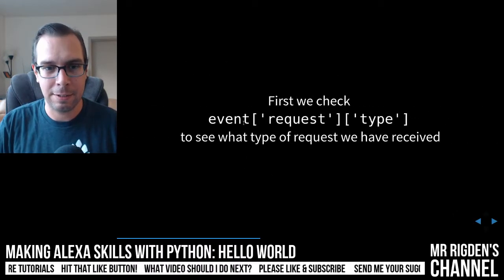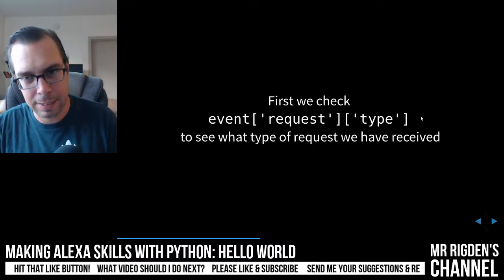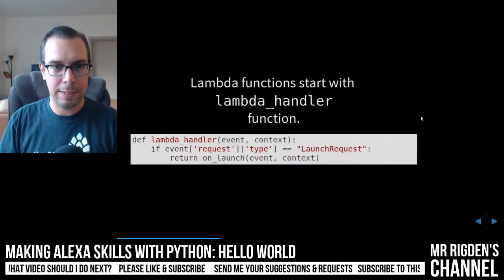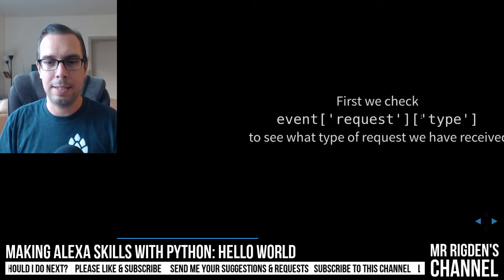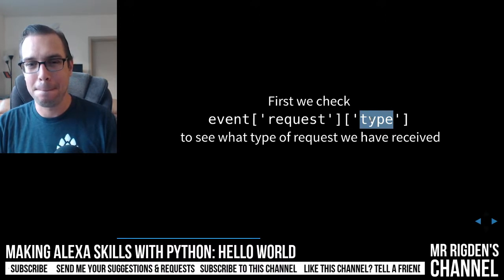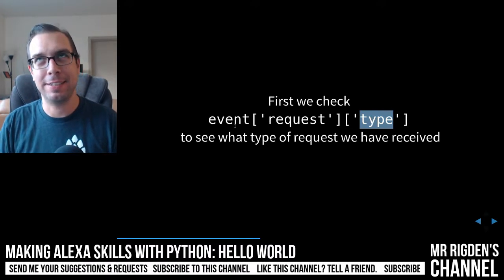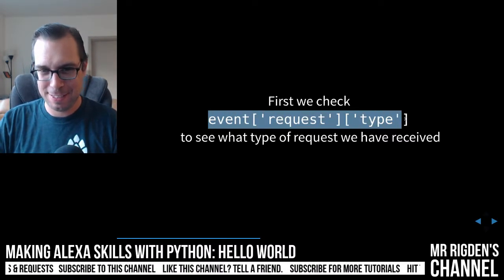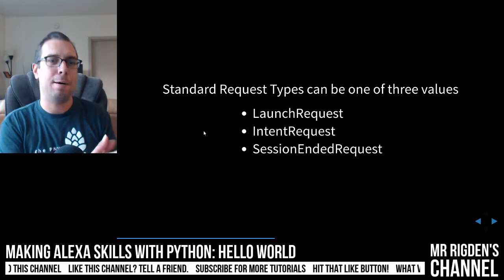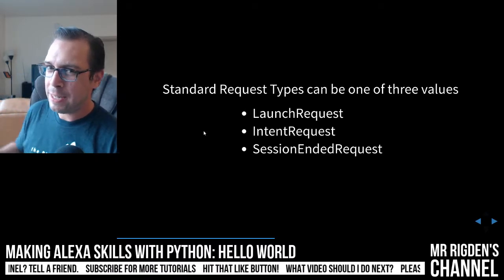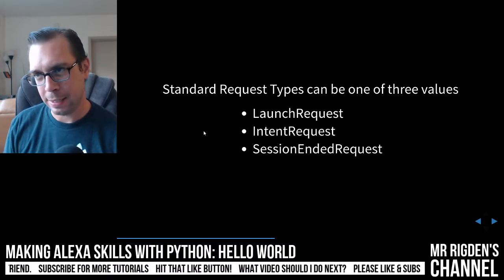You're going to be seeing a lot of nested dictionaries. The very first thing we're going to do in this function is check what kind of request we've received. There are three different standard requests you can get: a launch request, an intent request, and a session end request. Right now we're going to focus on the launch request — that's just the naked invocation. If you just say 'Alexa, open Dolly', that's going to send just a launch request, with no intent.